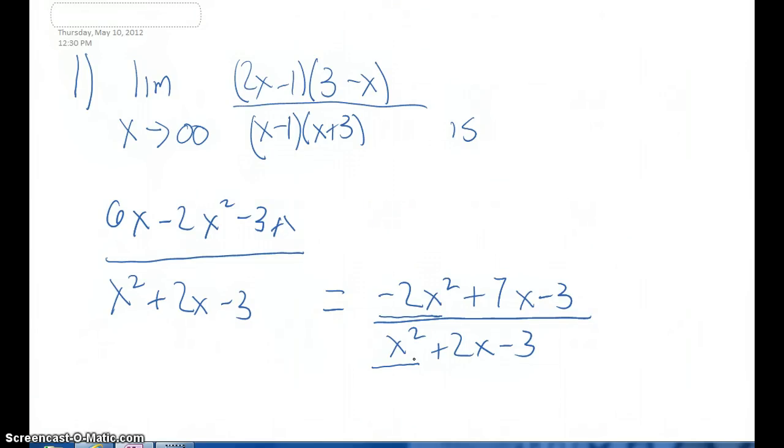When x is approaching infinity for the limit, all we need to do is negative 2 divided by 1, which gives us negative 2 as our limit for number one.